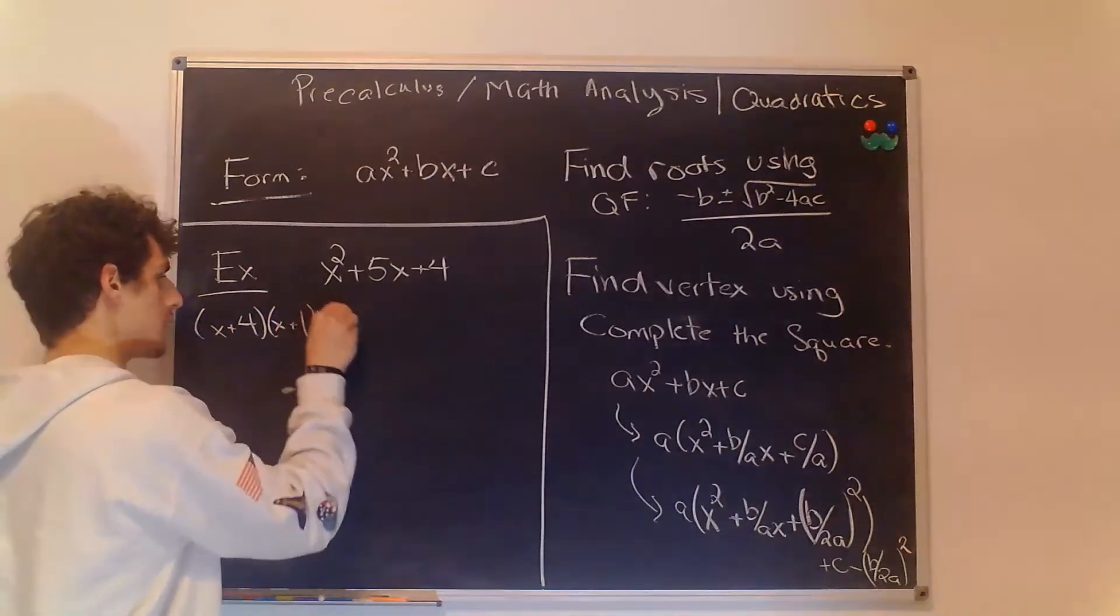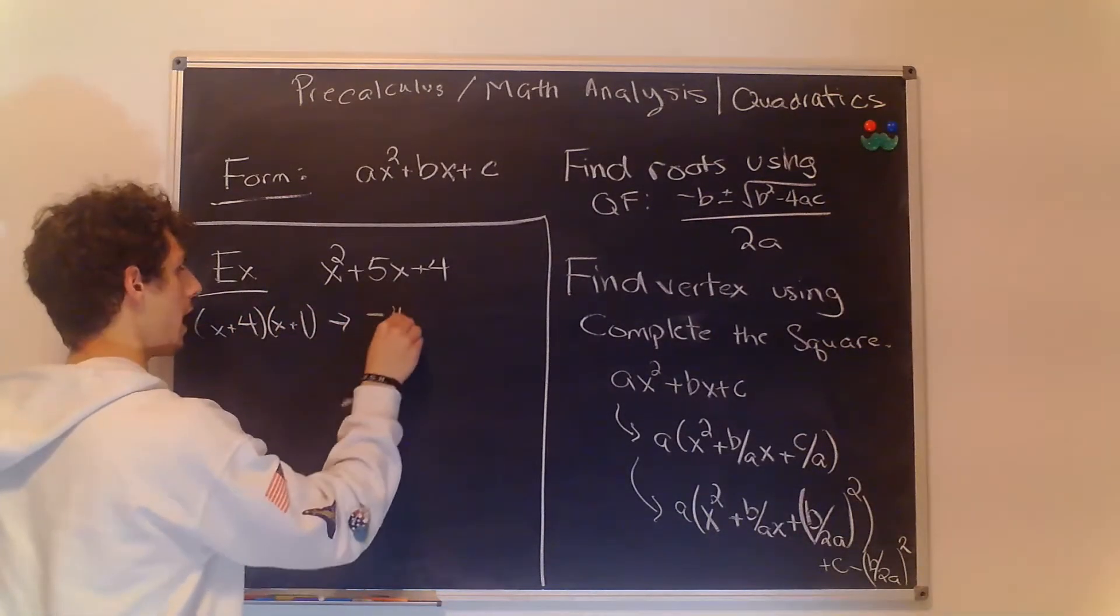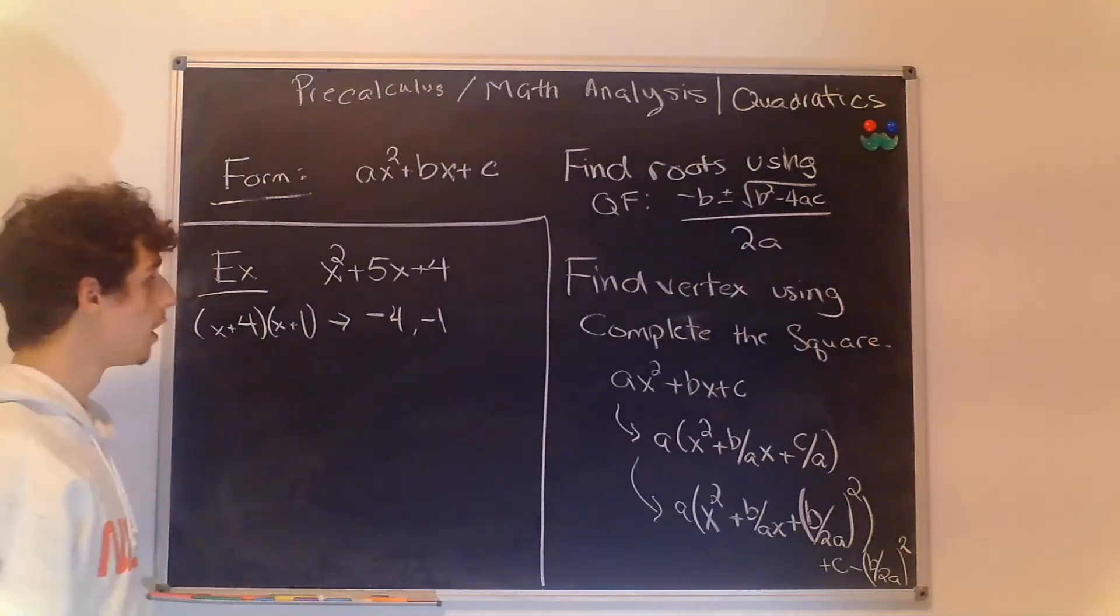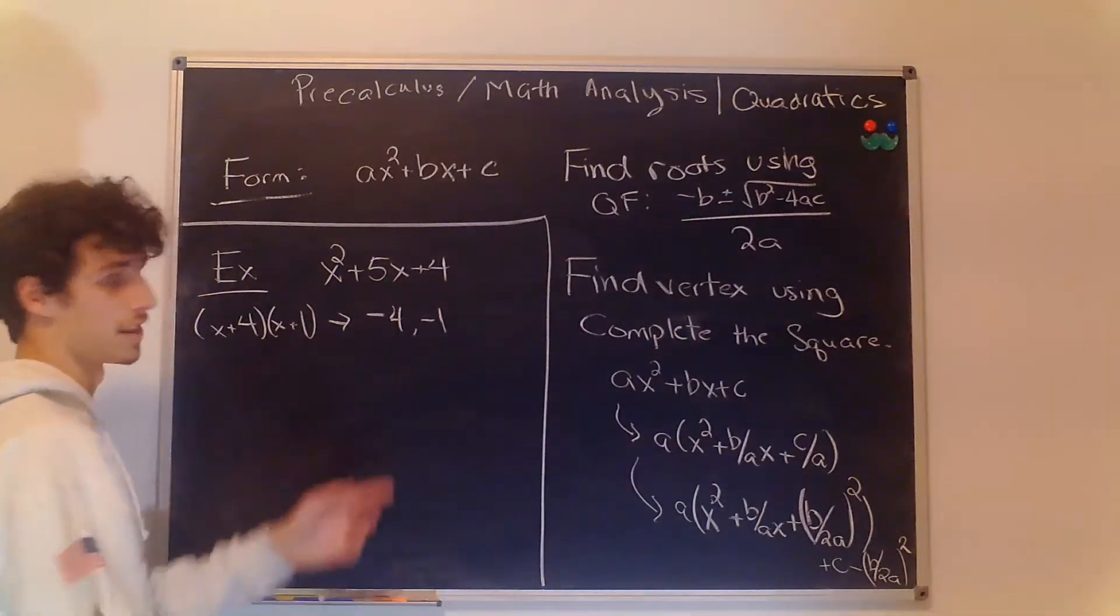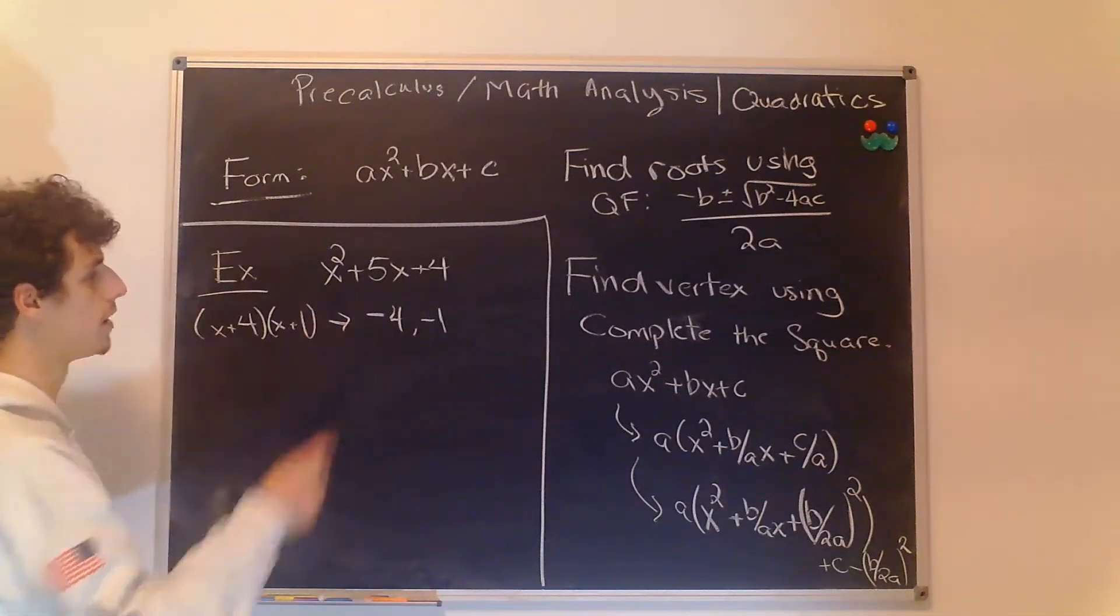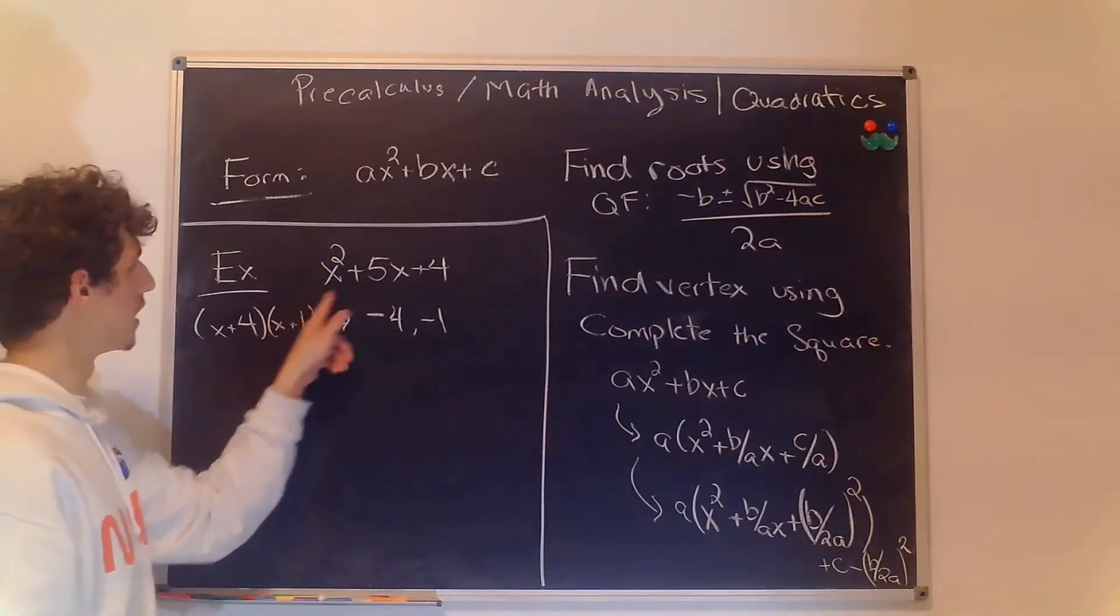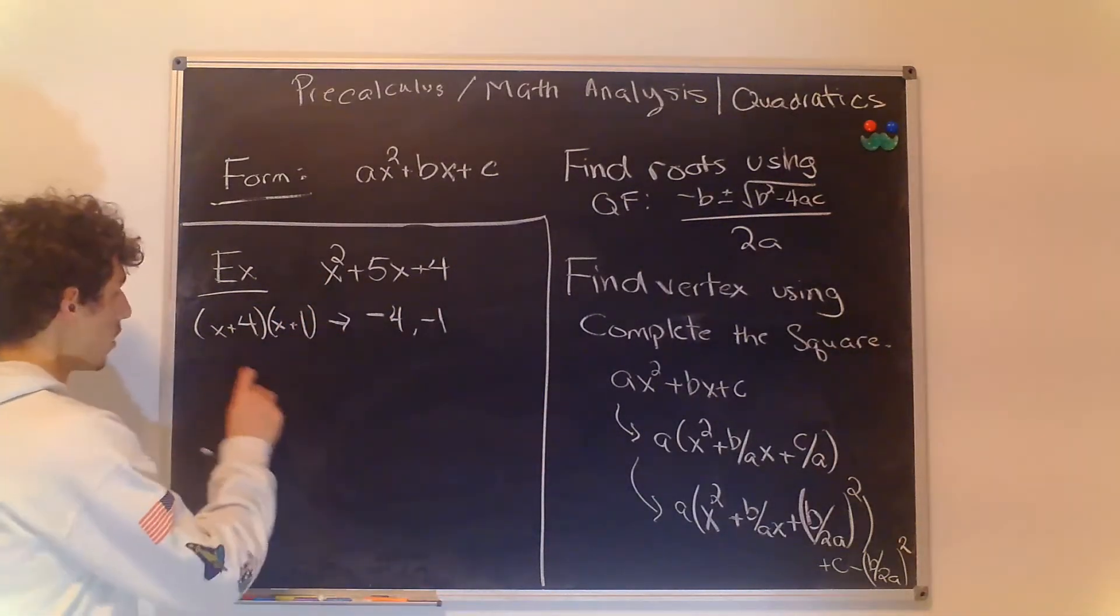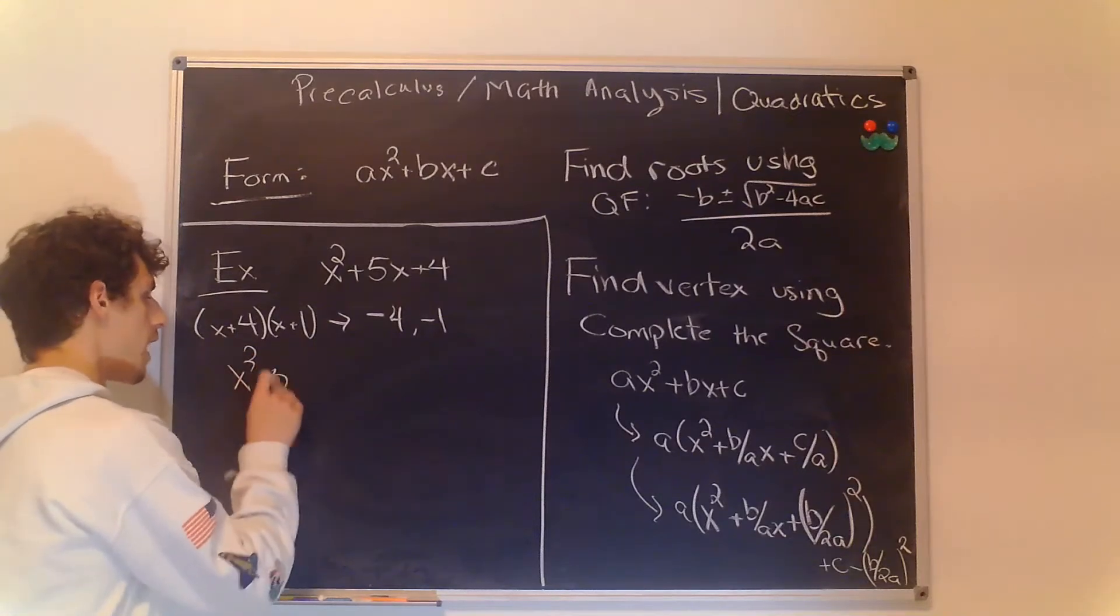But we want to actually find the vertex not the actual zeros, so let's complete the square with this method using this polynomial here. So we have x² + 5x + 4.